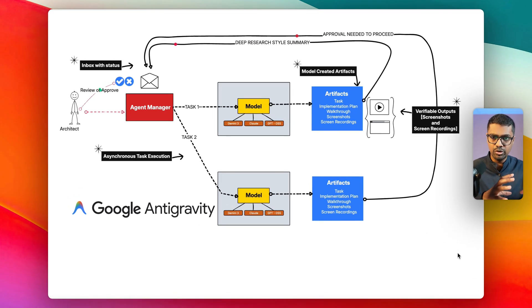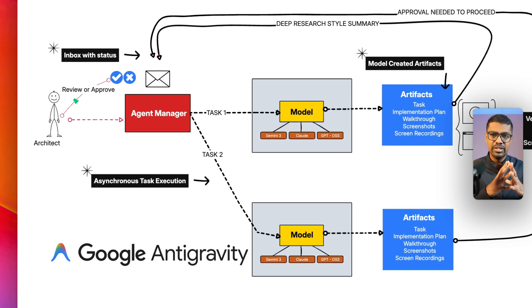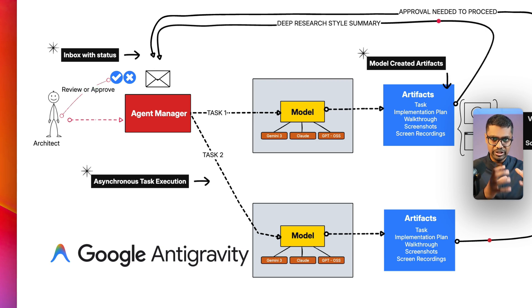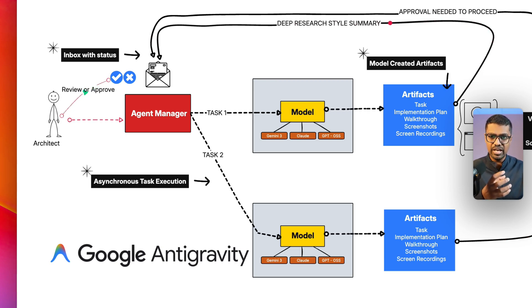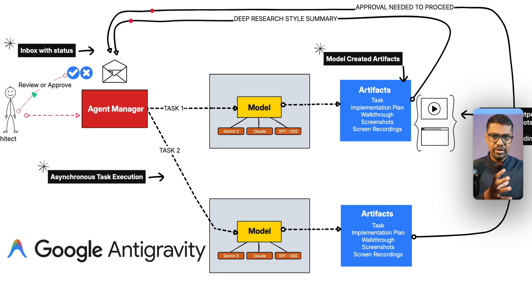Before talking about all of the core features, let's talk about one of the key features that differentiates Antigravity from other IDEs today — that is the Agent Manager. You can think of Agent Manager as an autonomous agentic coding engine. I can give the Agent Manager a task and ask it to perform a certain goal. I have a list of models to choose from, and multiple modes like planning and fast.